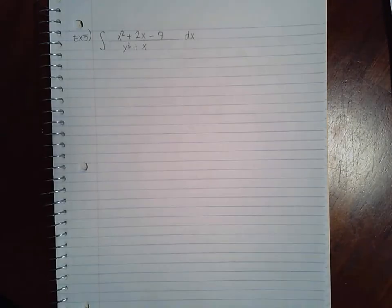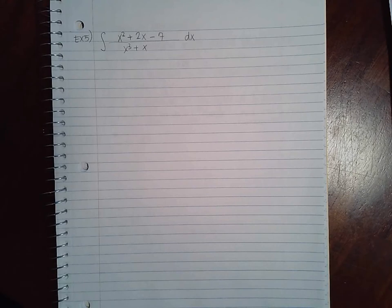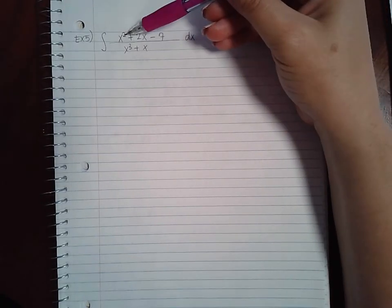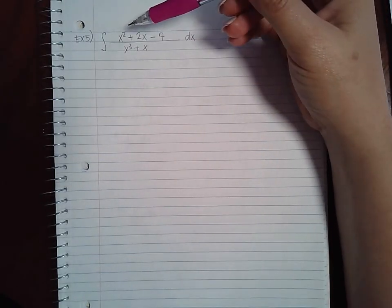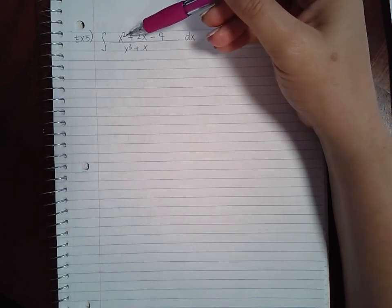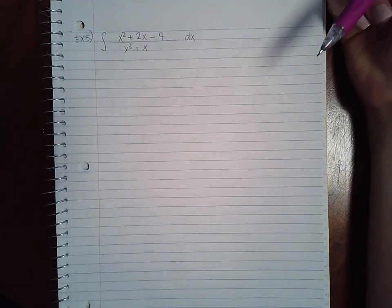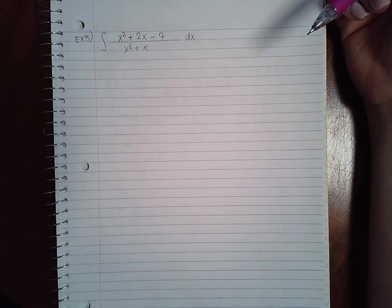Okay, this is the last example in the partial fraction section. So here we do not need to do long division because the numerator's exponent is smaller than the denominator's exponent. So what that means is that we will just jump straight into the factoring and then the integration.